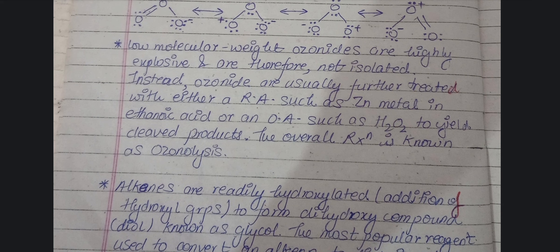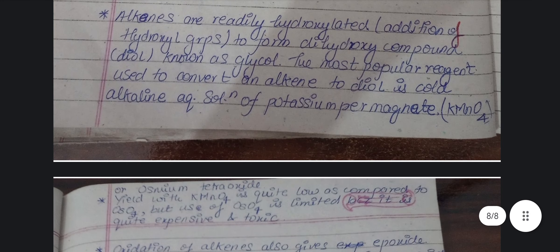Low molecular weight ozonoids highly explosive होते हैं — जिन ozonoids का weight काफी कम होता है, वो ज़्यादा explosive होते हैं। And therefore they are not isolated. Instead, ozonoids को further acid reducing agent या oxidizing agent के साथ treat करने पर different carbonyl compounds बना सकते हैं। इस overall reaction को ozonolysis कहा जाता है।